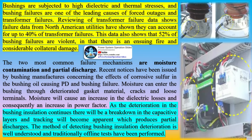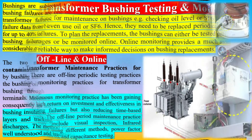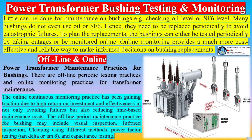The two most common failure mechanisms are moisture contamination and partial discharge. Recent notices have been issued by bushing manufacturers concerning the effects of corrosive sulfur in the bushing oil causing partial discharge and bushing failure. Moisture can enter the bushing through deteriorated gasket material, cracks, and loose terminals. Moisture will cause an increase in dielectric losses and consequently an increase in power factor. As deterioration continues, there will be a breakdown in the capacitive layers and tracking will become apparent, producing partial discharges.